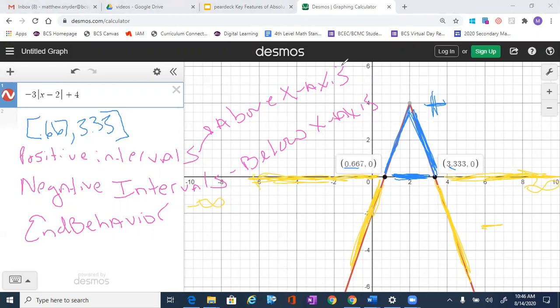So my negative interval would be, for example, negative infinity to 0.667. Or, that's what that symbol right there means, is or, 3.33 to positive infinity. And that would be my positive interval and my negative interval.